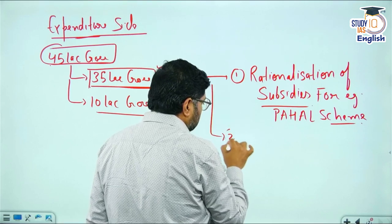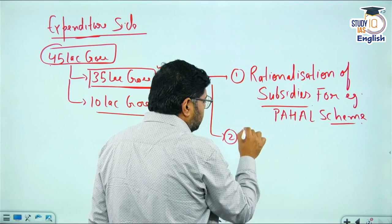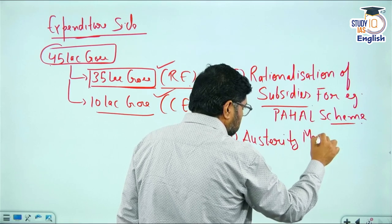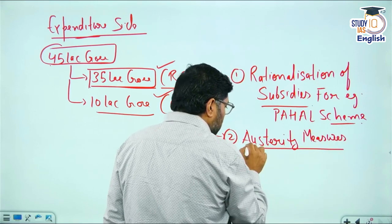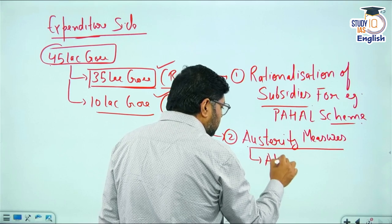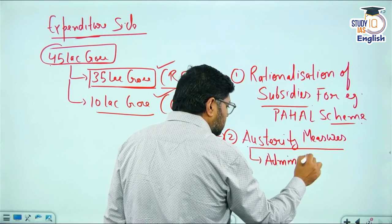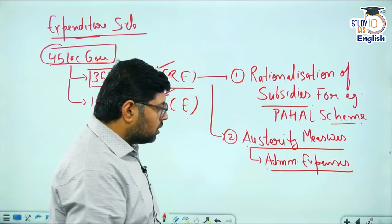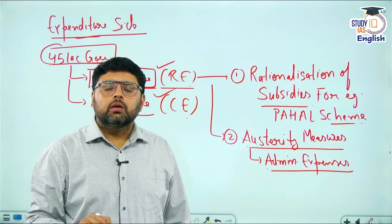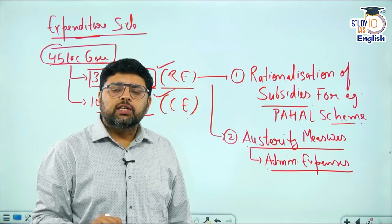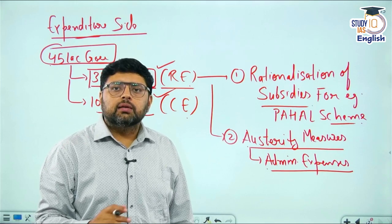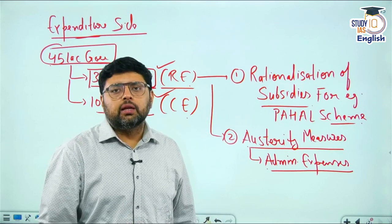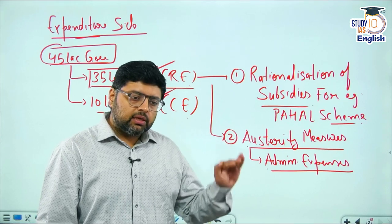Number two, the government has also taken austerity measures, which are related to administrative expenses. Earlier, whenever any official meeting was conducted it took place at expensive venues, but now the government has mandated that meetings should be conducted in government premises only, thus reducing cost.